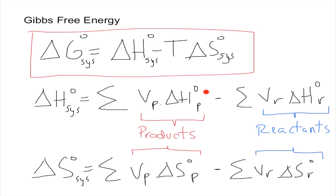For the enthalpy of formation: the sum of the number of moles times the enthalpy of formation for the products, minus the sum of the number of moles times the enthalpy of formation for the reactants. The same applies for the change in entropy: the sum of the number of moles times the entropy of formation for the products, minus the sum of the number of moles times the entropy of formation for the reactants. That gives us Delta H and Delta S, and the temperature we obtain from the problem.